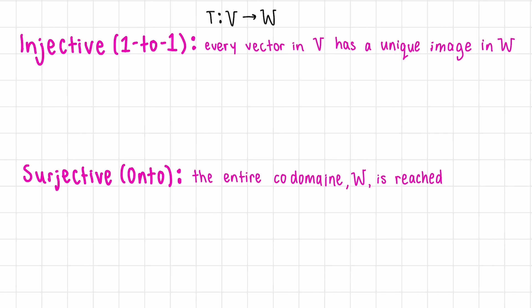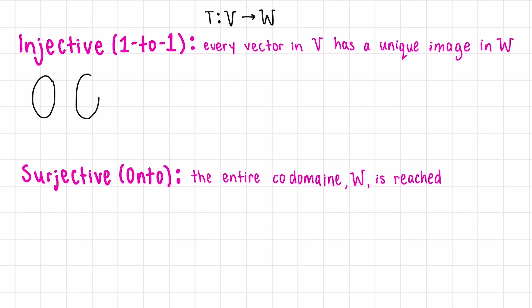Injectivity means that every vector in V, our domain, has a unique image in W. So no vector in W is mapped to twice. If this is V and this is W, if we pick two vectors, they have to land in two separate spots. If the image of V1 equals the image of V2, this implies that V1 must equal V2.